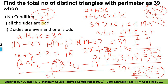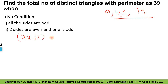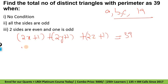Jab condition ek di — second wali — all sides are odd, tab kya aayega? Toh yahaan pe all sides are odd aage. Toh ABC 19 ya 19 se kam ho sakte hain. Toh ab hum kya karenge — all sides are odd, toh A ko maan lo 2x plus 1, plus B ko maan lo 2y plus 1, plus C ko maan lo 2z plus 1 equals 39. Toh humara x plus y plus z = 18.